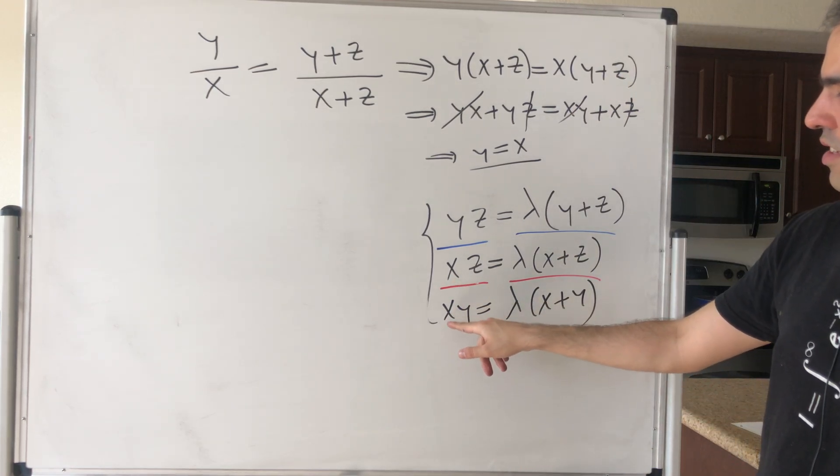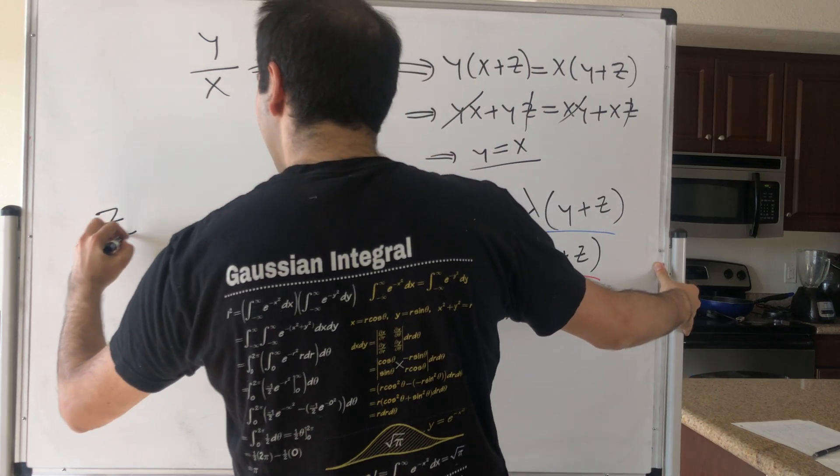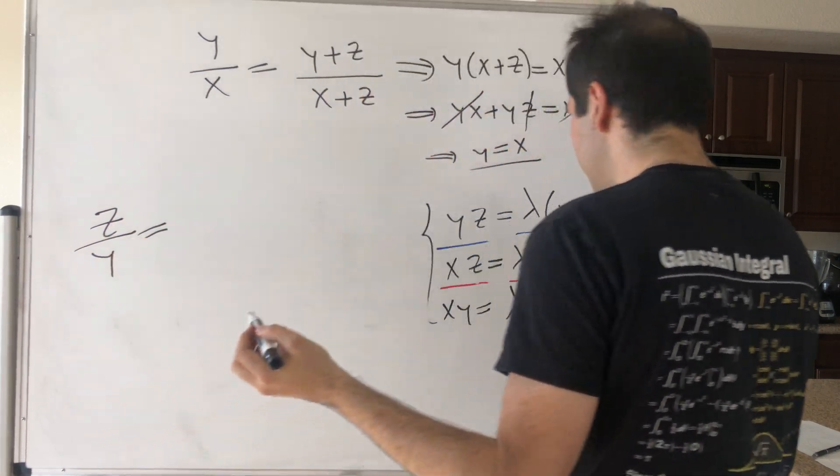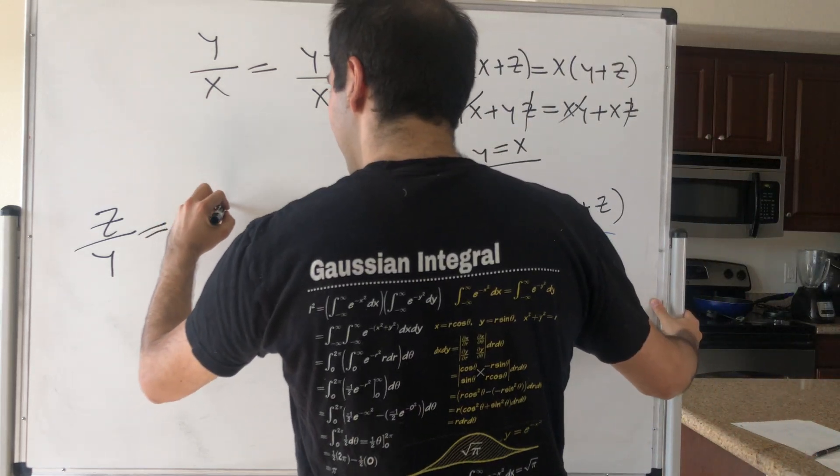If you cancel out those equations, x and x cancels out, so we get z over y. The lambdas cancel out, which is great, and then (x plus z) over (x plus y).